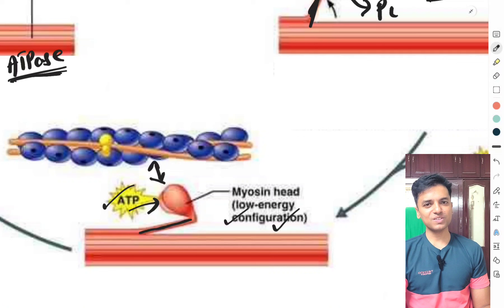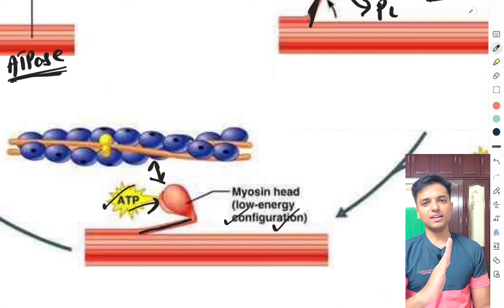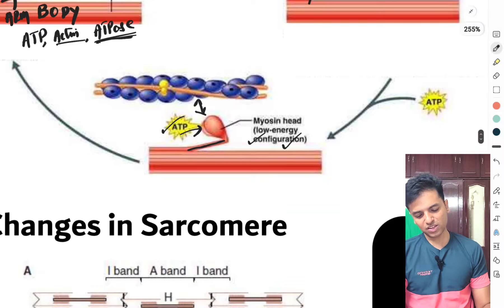Two very important points in the molecular basis of skeletal muscle contraction: first, the linking of the cross bridges to the actin molecule; second, the power stroke — which is the tilting of the myosin head towards the center of the sarcomere or towards the cross bridge arm — causing the sliding of the thin filament over the thick filament.